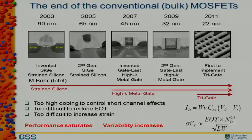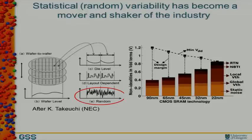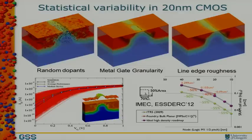FinFETs were introduced to remedy two problems in bulk technology: performance and variability. Variability is important because with bulk scaling, random dopants introduce unacceptable variability from a design point of view, particularly for SRAM design. This almost completely eats any design margins at 20 nanometers. Intel realized this a little earlier than the rest and was fast in introducing FinFETs, but everybody is now moving to the same solution.